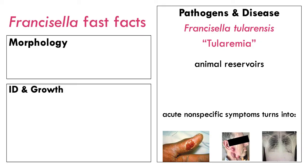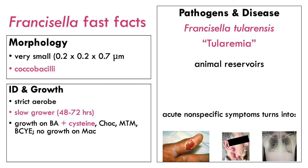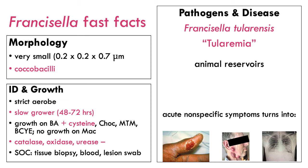Francisella tularensis — named after its discoverer — causes tularemia. These organisms are extremely tiny coccobacilli. They are strict aerobes and slow growers. They need blood agar supplemented with cysteine — a requirement — and can also grow on chocolate agar, modified Thayer-Martin, and BCYE, but will not grow on MAC. They are negative for catalase, oxidase, and urease. Specimen of choice is a tissue biopsy, blood, or lesion swab.